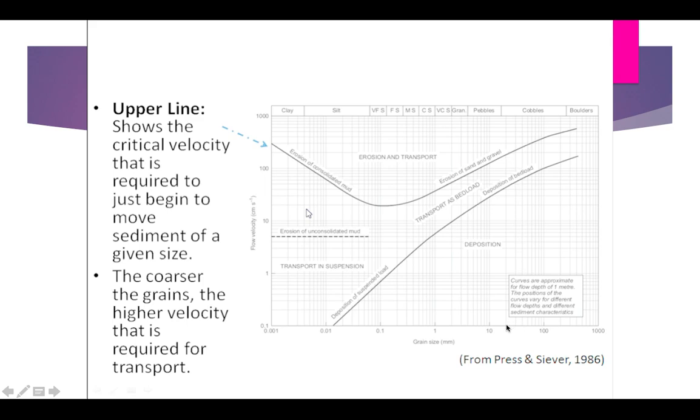But what about clay? Here we can see that the flow velocity for clay is equal to the flow velocity of cobble, but the size is very less—0.001 compared to 20 for cobble. Why is it so?